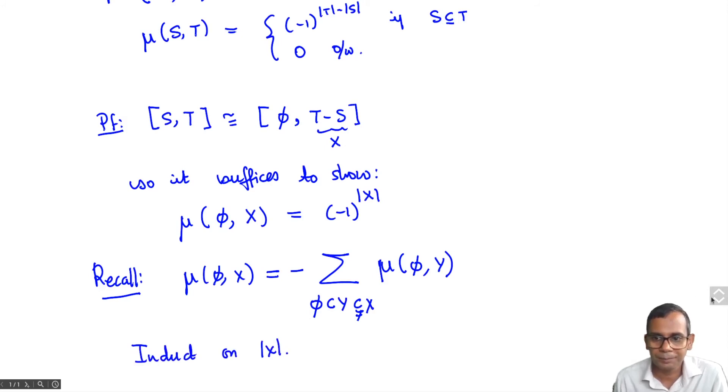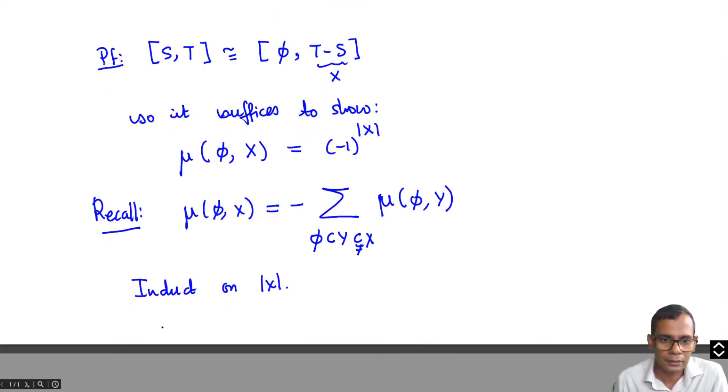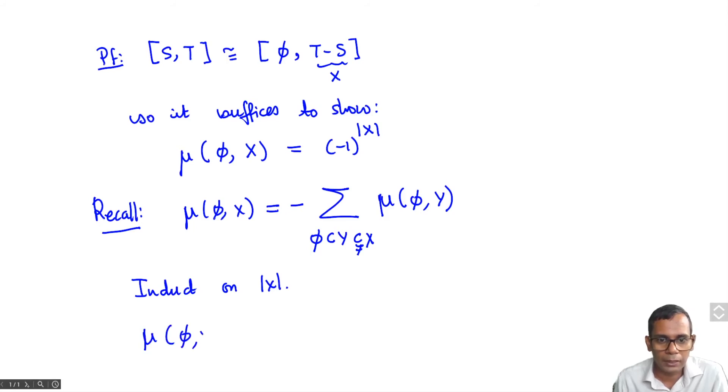So what do you get? You get mu(phi, X) equals, now this Y can have cardinality anything between 0 and n. So what we get is sum from k equals 0 to n minus 1. And these posets phi comma Y only depend on the cardinality of Y, so this is independent of the choice of Y.